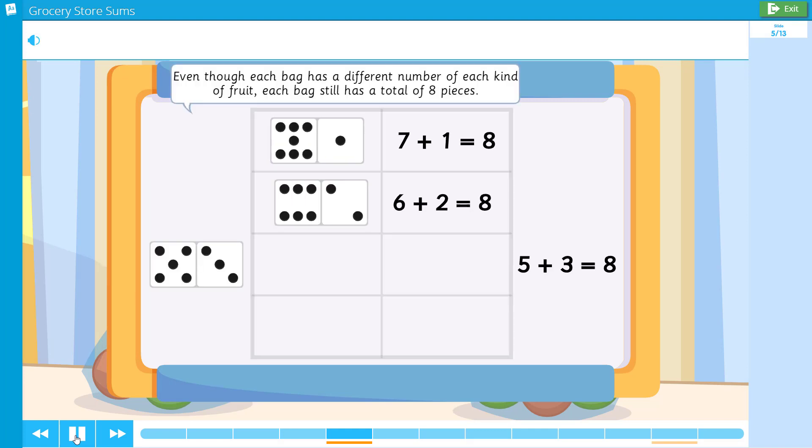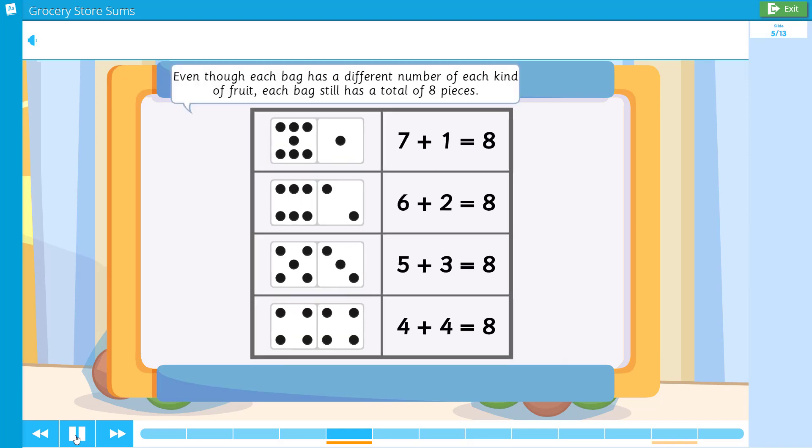Even though each bag has a different number of each kind of fruit, each bag still has a total of eight pieces. We found different ways to make the number eight.